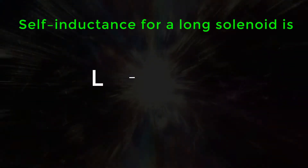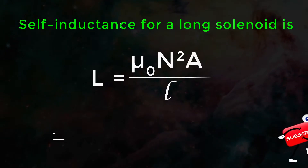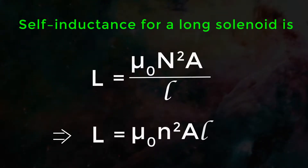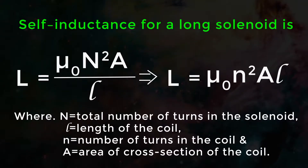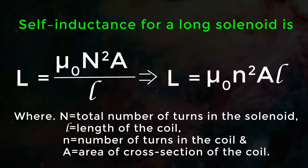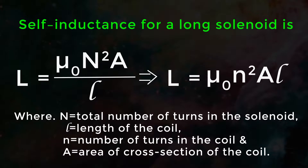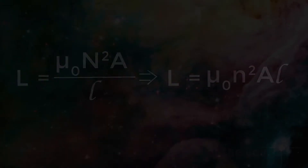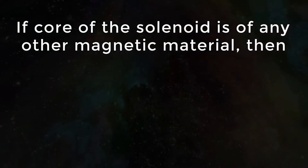The self-inductance for a long solenoid is L = μ₀ n² A / ℓ, where n is the total number of turns in the solenoid, ℓ is the length of the coil, and A is the area of cross-section of the coil.